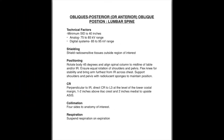For lumbar obliques, rotate the body 45 degrees and align the spinal column to the midline of the table and/or IR. Direct your CR to L3 at the level of the lower costal margin, 1-2 inches above the iliac crest, and 2 inches medial to the ASIS. Collimate on four sides to the anatomy of interest and suspend respiration on expiration.